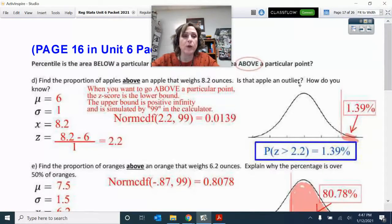Today when we did our notes on finding the areas—I'm on page 16 in the unit six packet—we talked about finding the X value and finding the Z score, and then how to compute that area by using the calculator normalcdf to find the area we wanted.